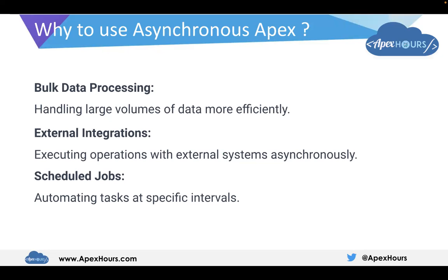Here's why to use asynchronous Apex: for bulk data processing — suppose we have millions or billions of records, using asynchronous Apex we can handle large data volumes for more efficiency. Also for external integration, executing operations with external systems asynchronously, and for scheduled jobs. A scheduled job is an automation — for example, if I want to send an email to a person on their birthday every day, I can write the logic and schedule it at midnight. It's an automated process.